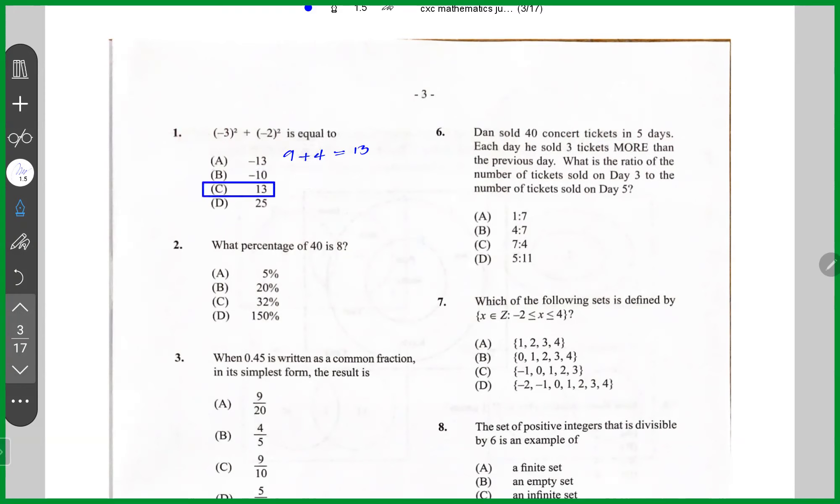Question number two, what percentage of 40 is eight? So you're going to put eight over 40, multiply by 100%. Eight goes into 40 five times. Five goes into 100 twenty times. So the answer is 20%.